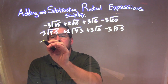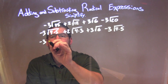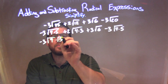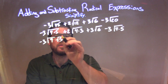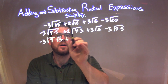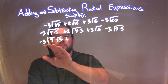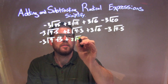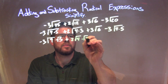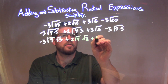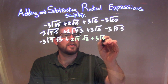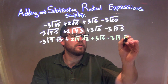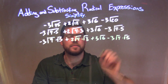Let's go break this apart. Negative 3 times the square root of 9 times the square root of 5. I'm going to break apart each one of those to the square root of each number individually. Same thing here — 4 times the square root of 3, plus 3 square root of 6, minus 3 times the square root of 4 times the square root of 5.